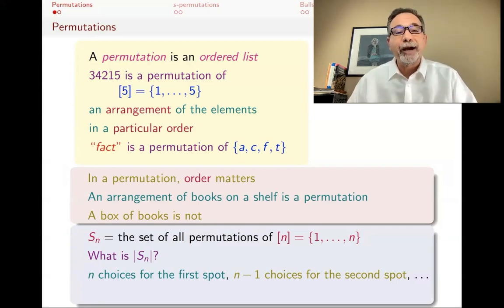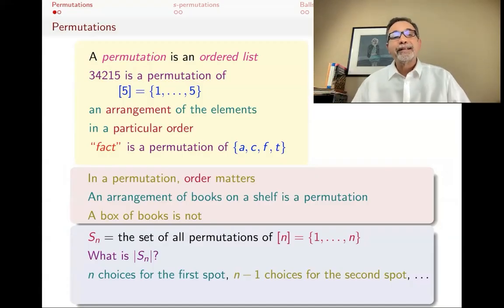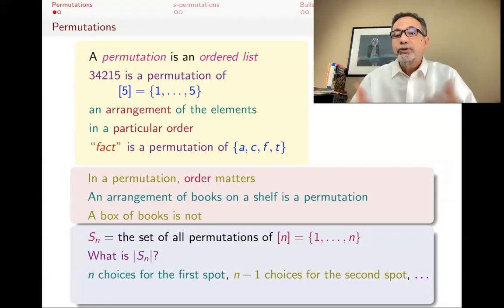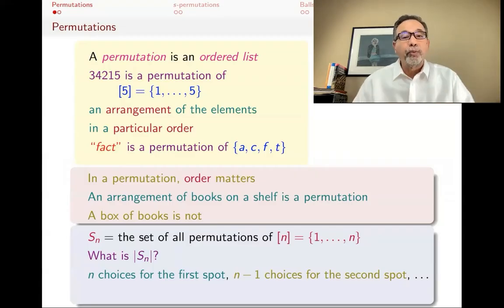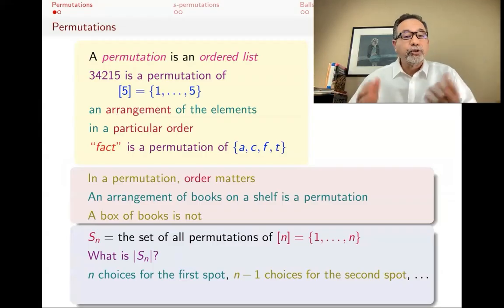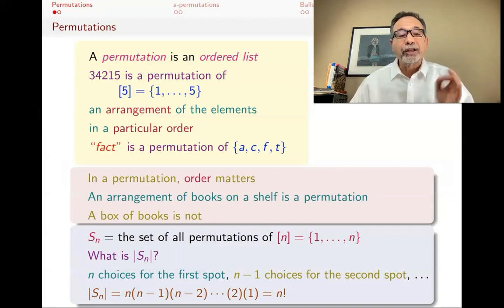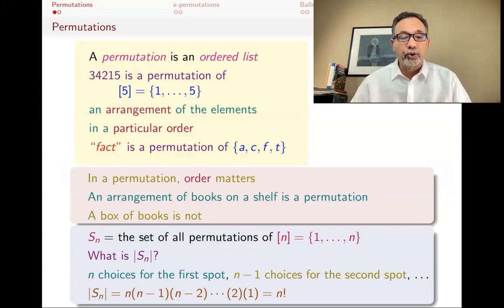For the third spot, you will have N minus two choices, then N minus three choices for the next one, and so forth. By the time you get to the penultimate case, you will have two choices, and for the last element you will have one choice — because you'll just have to pick the one element that's left. So the total number of permutations is N times N minus one times N minus two, all the way times two times one, and that's what we call N factorial. So the number of permutations of a set with N elements is N factorial.